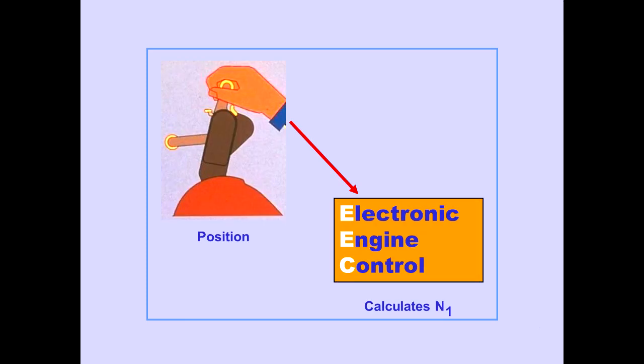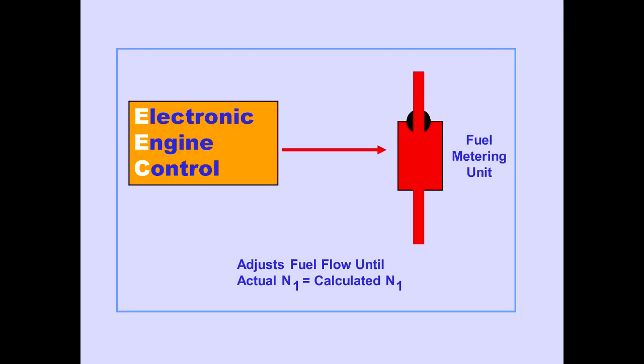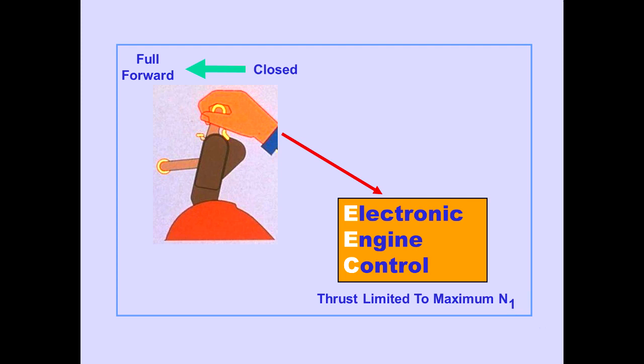Based on thrust lever position, the electronic engine control calculates an N1 value between idle and maximum N1. The EEC commands the fuel metering unit to adjust fuel flow until actual N1 RPM equals calculated N1 RPM. As the thrust lever moves from the closed position to full forward, the EEC increases thrust from idle to maximum N1. At the full forward position, thrust is limited to maximum N1.